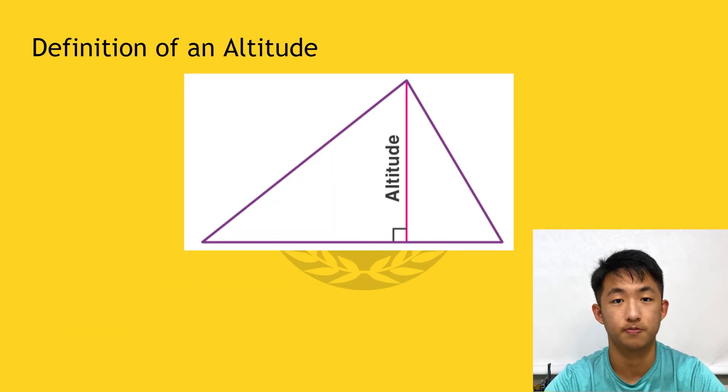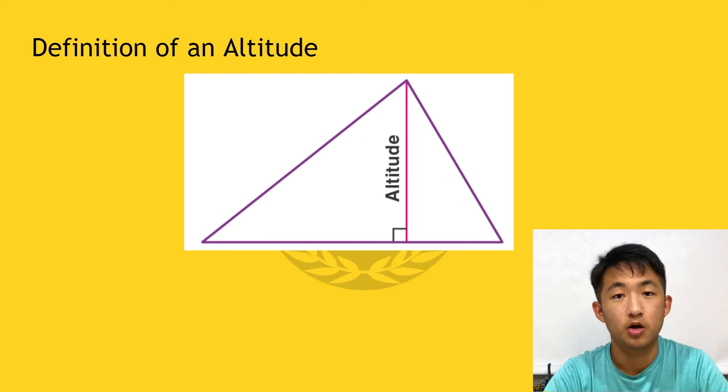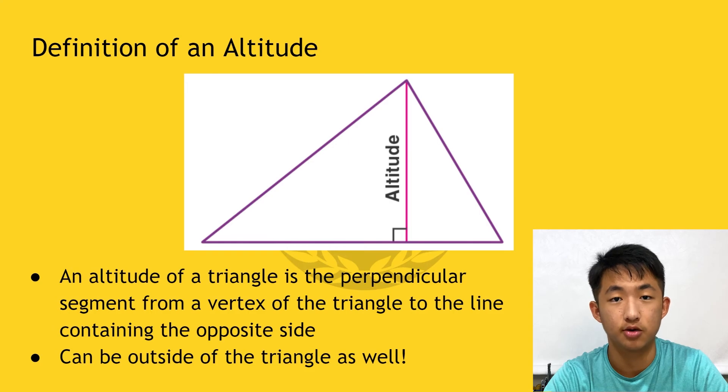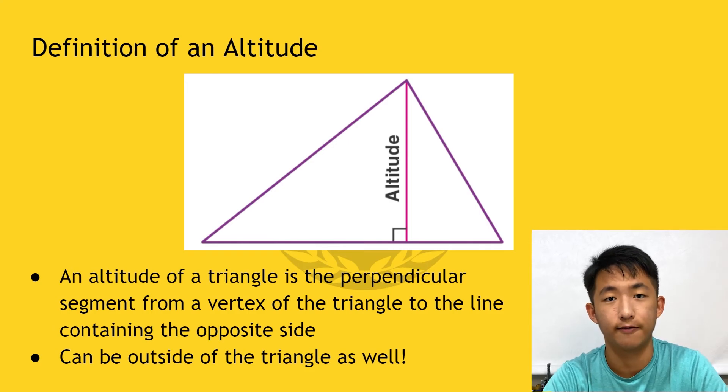Moving on, an altitude of a triangle. An altitude of a triangle is the perpendicular segment from a vertex to the opposite side of the triangle. Remember that there are three altitudes per triangle and that altitudes can also exist outside of the triangle itself.